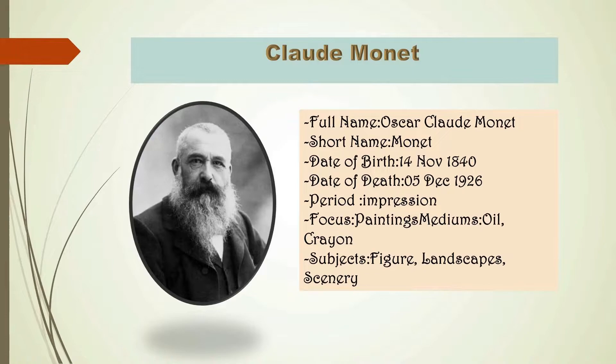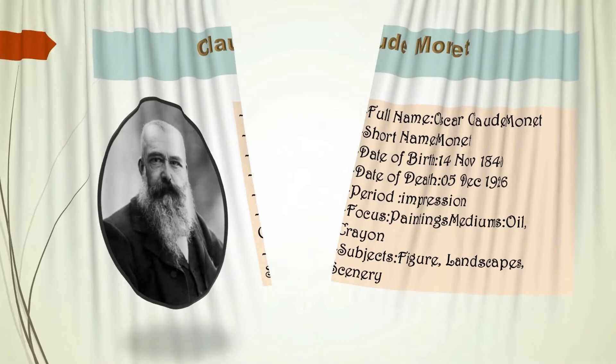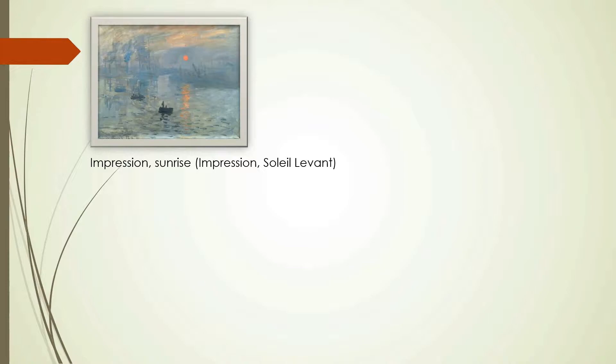Impressionism is the movement he belongs to. He is a French artist. His early works include landscapes, seascapes, and portraits, but attracted little attention. The title of his painting, 'Impression, Soleil Levant,' was exhibited in 1874.